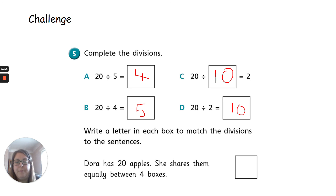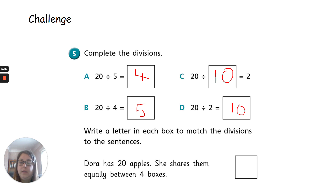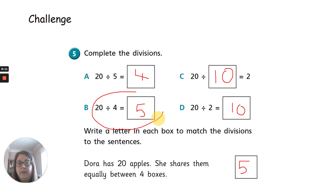Last one: Dora has 20 apples and she shares them equally between four boxes. How many does she have? Pause the video if you need some more time. It is five — because it's just like the division we just did. Well done, perfect.